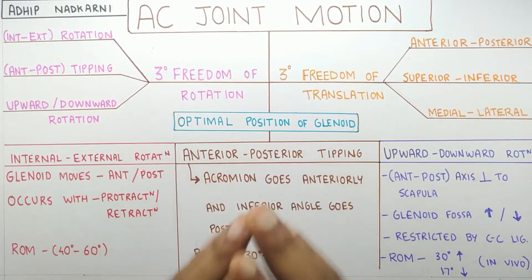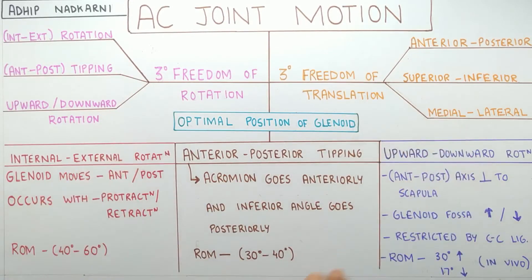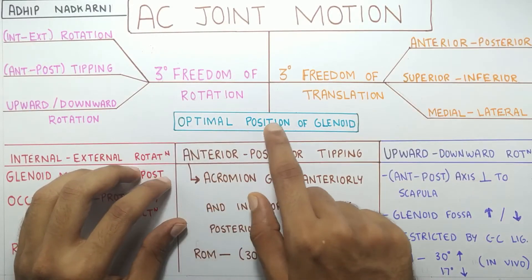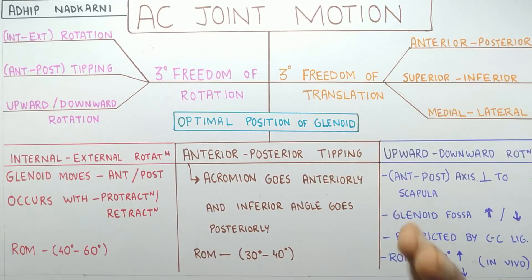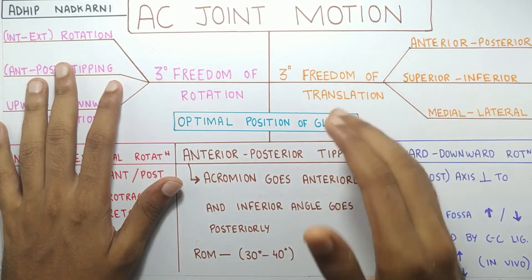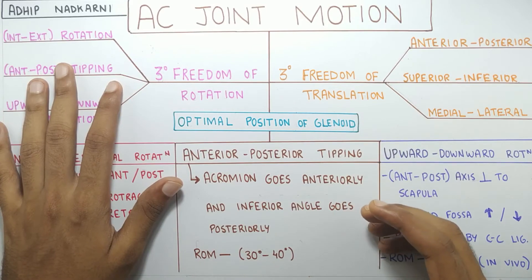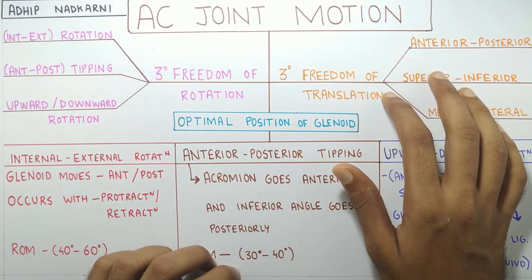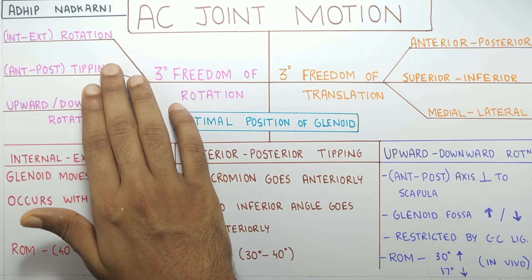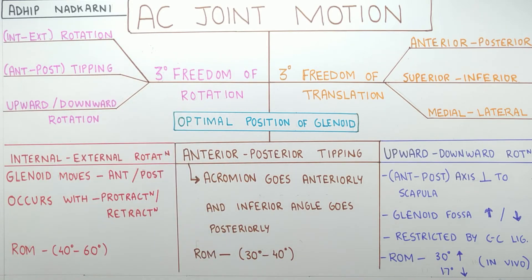Let's summarize. The main function of the AC joint, along with the SC joint, is to provide optimal positioning of the glenoid for the humeral head to move. There are three translations — anteroposterior, superior-inferior, and medial-lateral — and three rotations — internal and external rotation, anteroposterior tipping, and upward and downward rotation. That's all for today, thank you for watching.